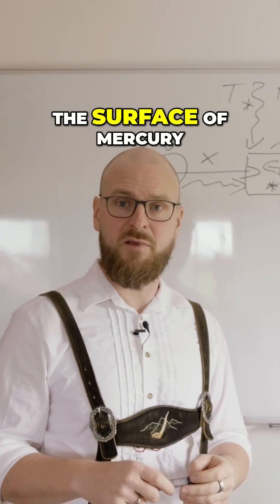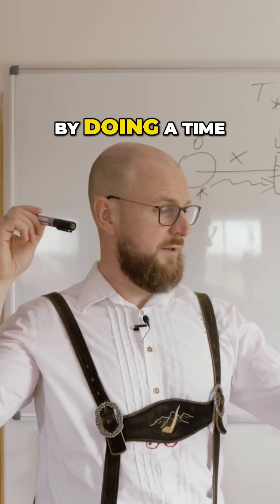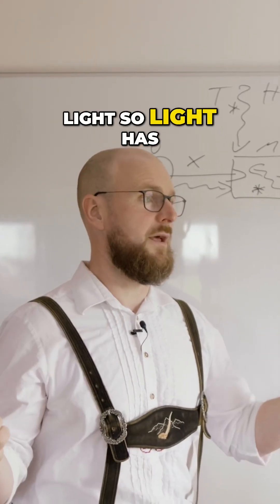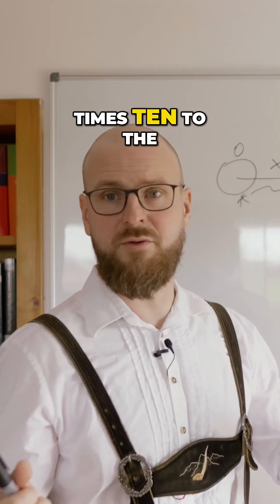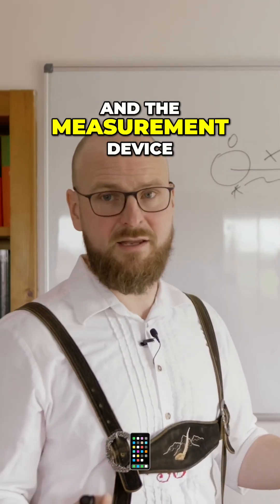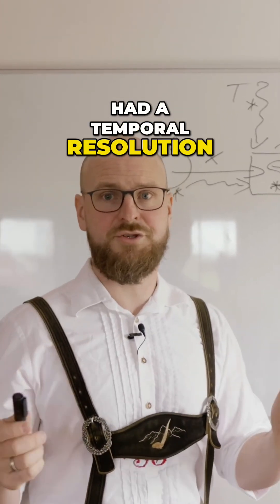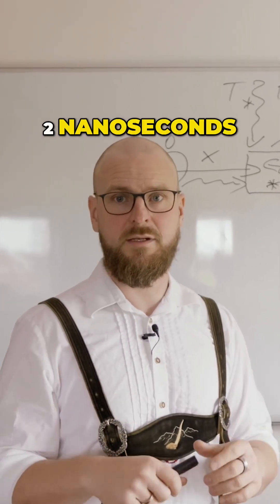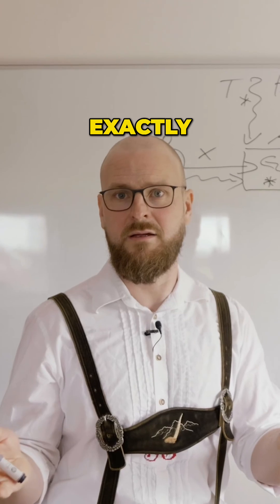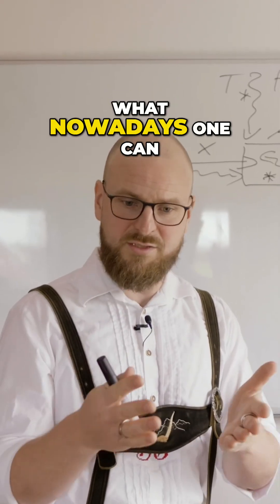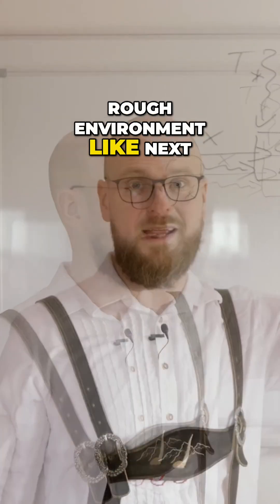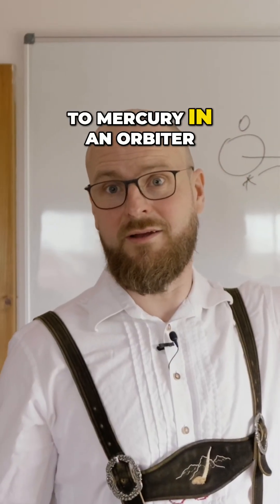Measuring the surface of Mercury by doing a time-of-flight measurement with light. Light has a speed of 3 times 10 to the 8 meters per second roughly, and the measurement device had a temporal resolution of about 1 to 2 nanoseconds — that's in the gigahertz range. This is exactly what one can easily provide within a rough environment like next to Mercury in an orbiter.